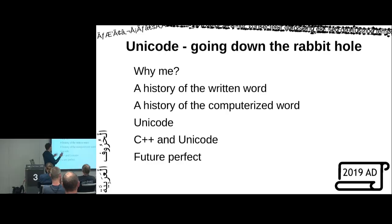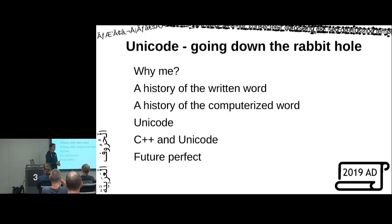We're going to talk about why I'm giving this talk, then the written word, the computerized word. Somebody invented Unicode for a reason, so we'll talk about that. We'll go into C++ and Unicode — how much it actually works, how much it doesn't work, what kind of stuff we're going to do. And then we're going to talk about the future perfect, which is of course where we're going.